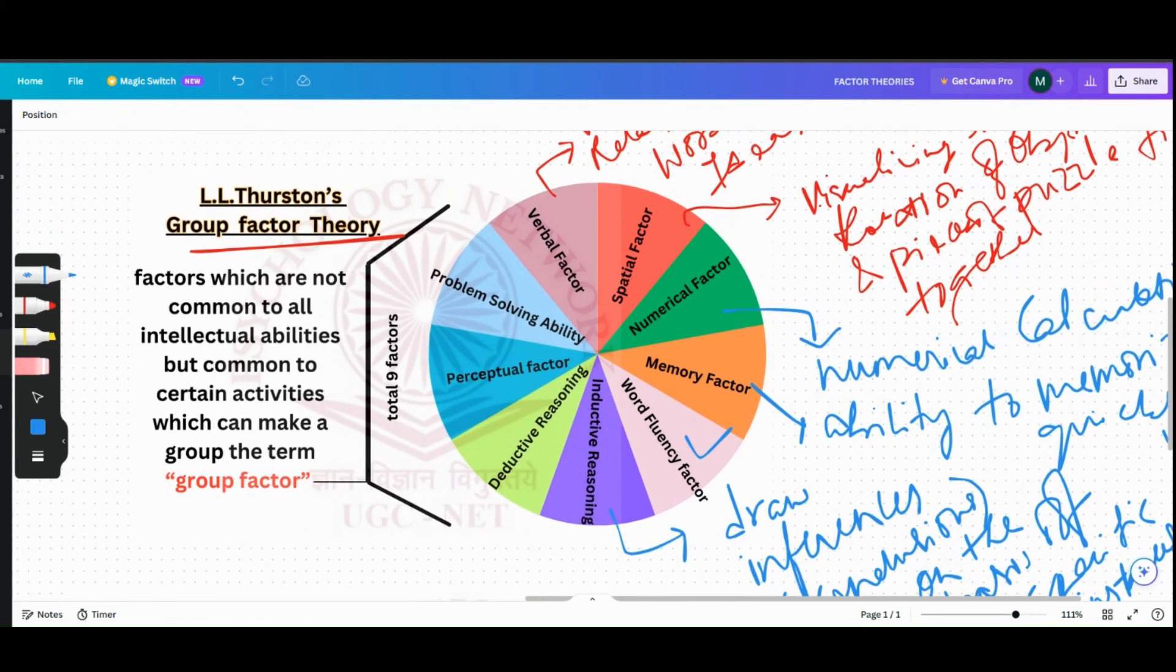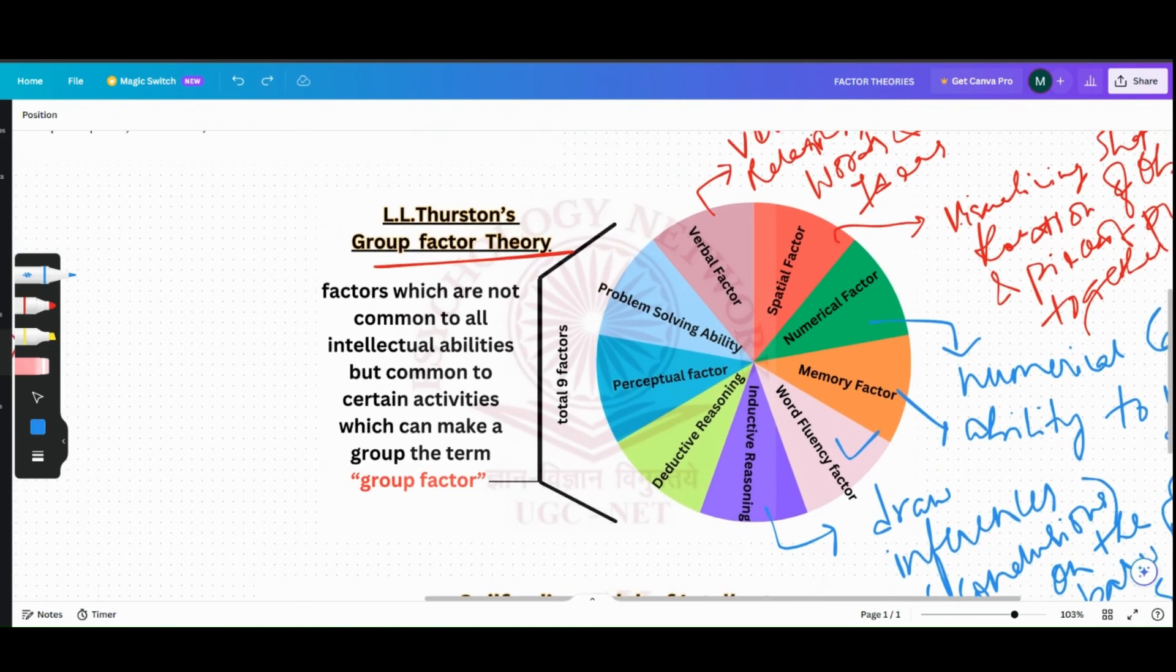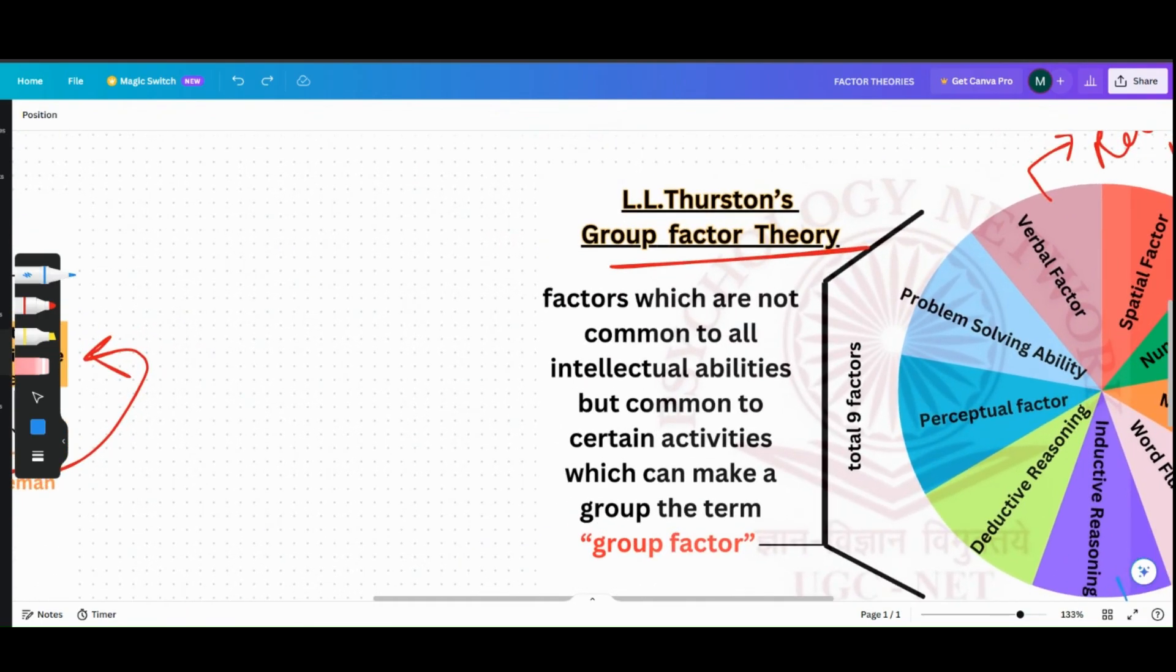Now the Group Factor Theory's most weakest aspect was that it discarded the concept of common factor. It completely discarded the concept of common factor.